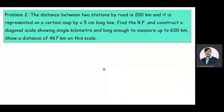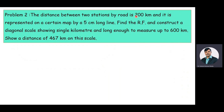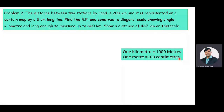The given problem is: the distance between two stations by road is 200 kilometers, and it is represented on a certain map by a five centimeter long line. Find the RF value and construct a diagonal scale showing single kilometers, long enough to measure up to 600 kilometers. Show a distance of 467 kilometers on the scale.